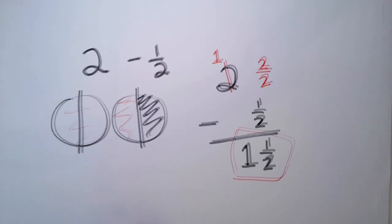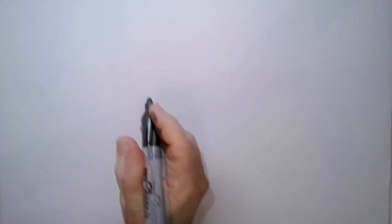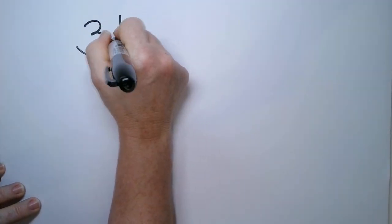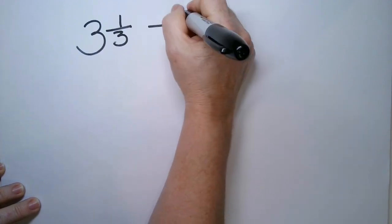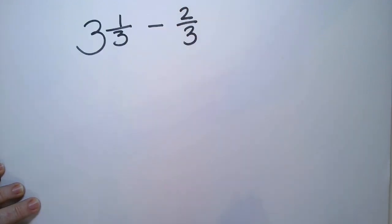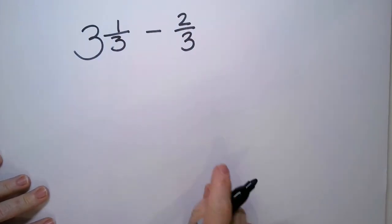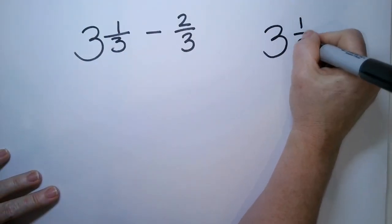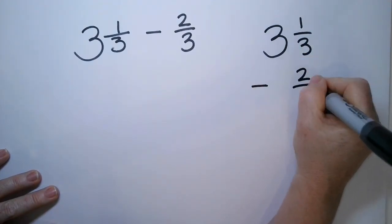So let's do one that's a little bit more challenging. Suppose I have a number like three and a third minus two thirds. So the first thing we want to do is make sure the denominators match and they do. So we're going to put three and a third here minus two thirds.